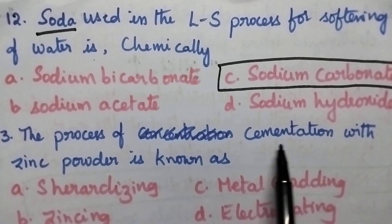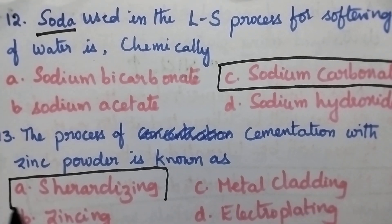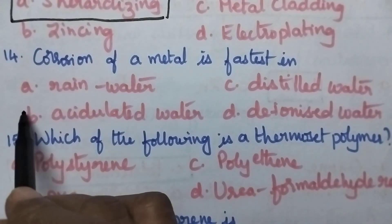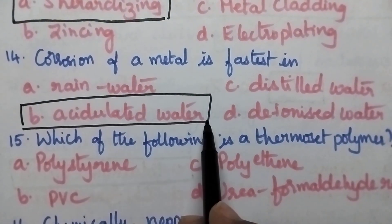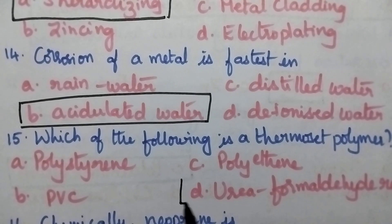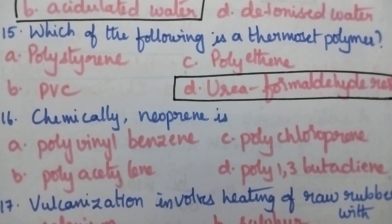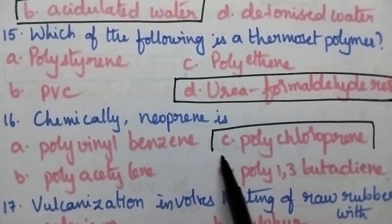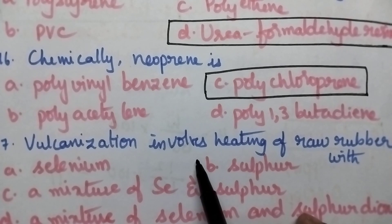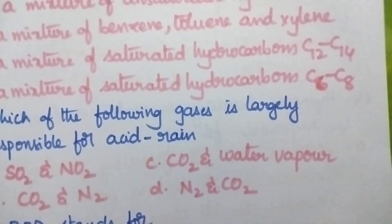The process of cementation with zinc powder is known as shudderdizing, so option A is the right answer. Corrosion of metal is fastest in acidulated water — option B is the right answer. Urea formaldehyde resin is a thermosetting polymer. Neoprene is nothing but polychloroprene, so option C is correct. Vulcanization involves heating raw rubber with sulfur, so option B is the right answer.